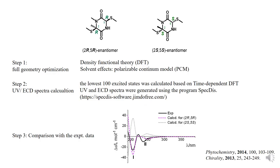Let's look at one example of how ECD works for the assignment of the absolute configuration of Lensodipline B. Lensodipline B is a sulfur-containing natural product isolated from fungus, and its relative configuration was determined by extensive NMR measurements. Accordingly, its absolute configuration could be either 2R,5R or the fully opposite 2S,5S. Due to its physical properties, Lensodipline B failed to yield a single crystal for X-ray crystallography, so ECD was applied in its isolation paper to address the absolute configuration.